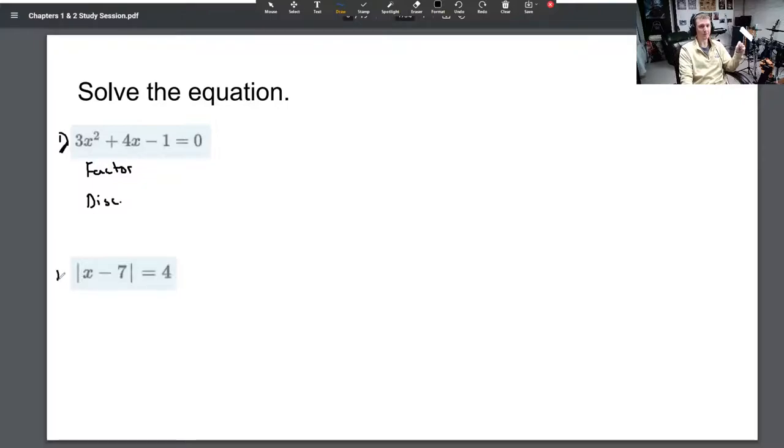Or, problem two, you're going to have to use the definition of absolute value to say that this is either four, or this is negative four. And you're going to solve both of them. You're going to get two solutions. You'll get 11, and you'll get three.